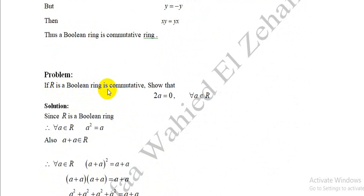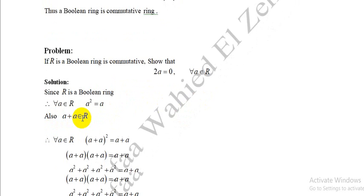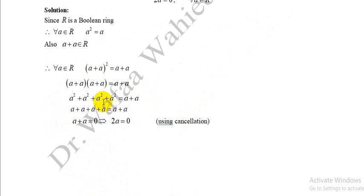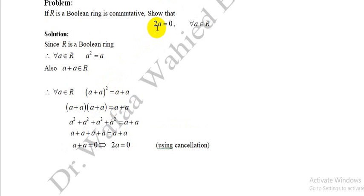Problem: If R is a boolean ring, show that 2a = 0 for all a ∈ R. Solution: Since R is a boolean ring, every element a satisfies a² = a. We want to prove that 2a = 0 for all a ∈ R, meaning every element in the boolean ring satisfies this second condition.